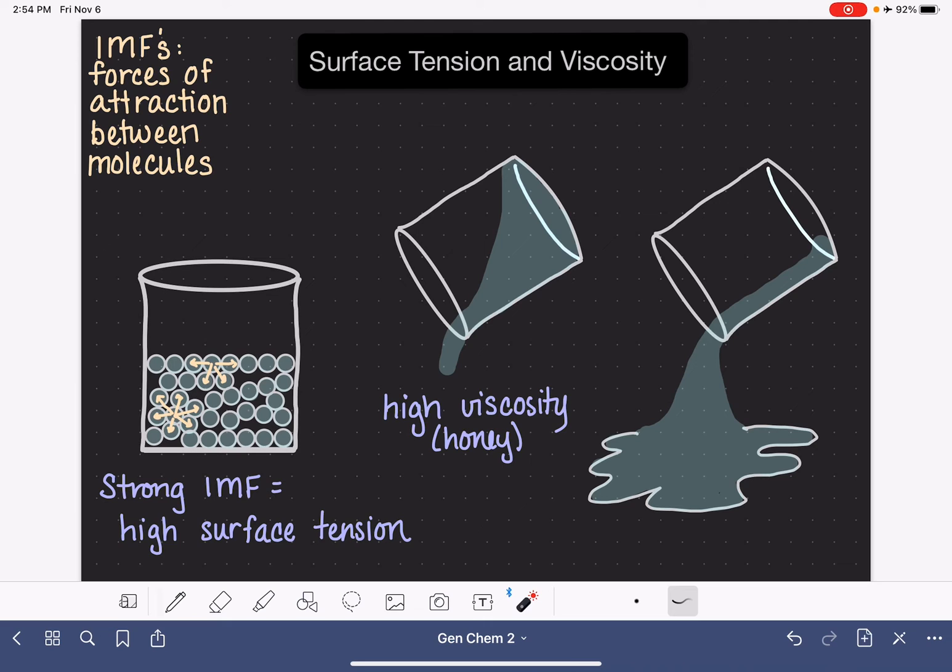On the other hand, this beaker right here, which I've also tipped over, the liquid inside this beaker just pours right out. So it's just poured right out onto the floor. This would be a substance that has low viscosity, meaning that it has very low resistance to flow, like water. Imagine pouring out a glass of water and how quickly that water just comes right out of the glass and pours right out onto the floor.